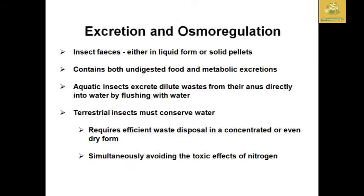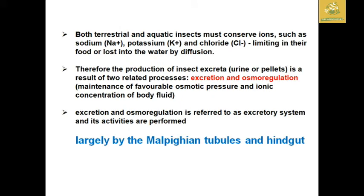Terrestrial insects simultaneously avoid toxic nitrogenous waste in their body, using a special excretion system with low water usage. Both terrestrial and aquatic insects must conserve ions such as sodium, potassium, and chloride ions, which may be limiting in their food or lost in water by diffusion. Therefore, the production of insect excreta — urine or pellets — is a result of two related processes: excretion and osmoregulation. By maintaining favorable osmotic pressure and ionic concentration of body fluids, balance is maintained in their body.